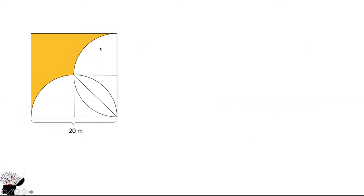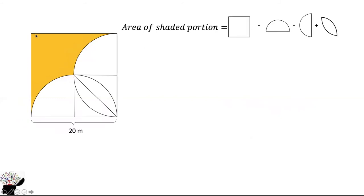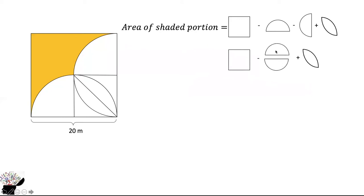For the second method, if we are able to find the area of this portion we can find the area of the shaded portion. The area of the shaded portion equals the area of the bigger square minus the area of this semicircle, minus the area of this semicircle again, plus the area of this lens. Since we have two semicircles, they combine to make a circle. We have the bigger square minus the circle, but we still need to find the area of the lens.